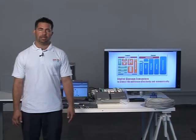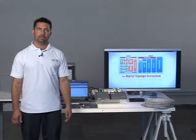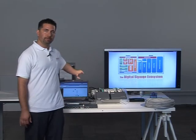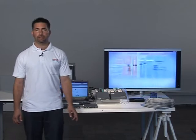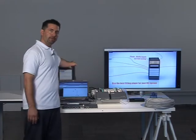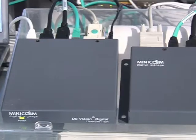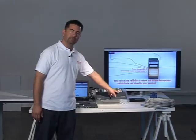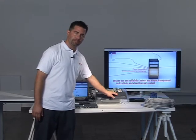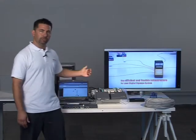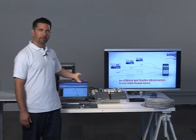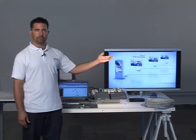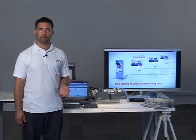The serial extension enables sending a serial command from the player through our system to the screen — for example, turning the screen on and off. For the serial extension, we connect a serial cable from the player to the transmitter, and using the same network cable, a serial cable from the receiver to the screen. To test this, we can send a serial command from the player through our system to the screen.